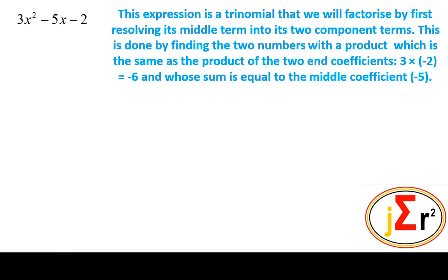In order for us to resolve that middle term into its two components, we need the two numbers which, when multiplied, will give the same product as three times negative two. They will have a product of negative six. When we add those two numbers, the result will be negative five.